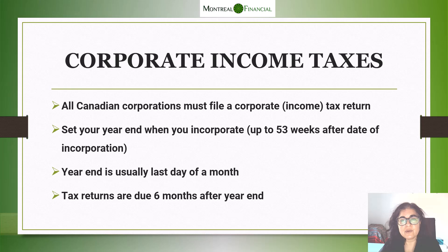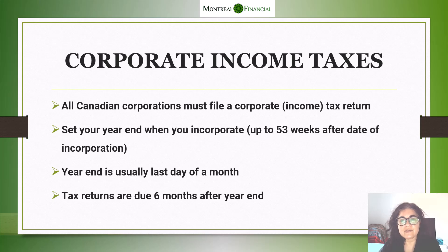For example, if you were to start your incorporation on October 15th, it might make sense to choose the September 30th year end. Or you could also choose December 31st, or June 30th, depending on your business seasonality and some other factors. Once you have established your year end — say you choose September 30th — your corporate tax return is due six months after your year end.